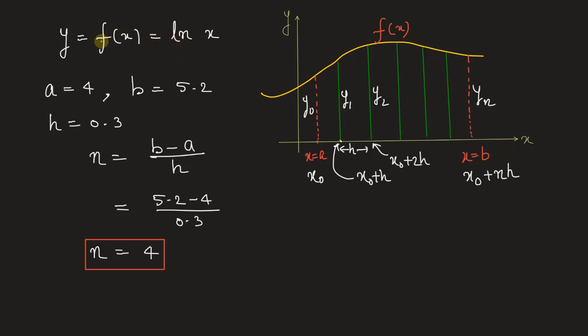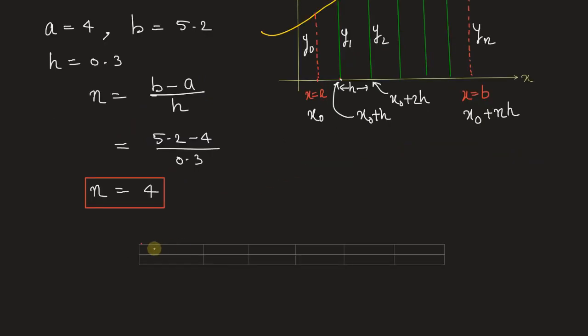Now let's make a table to calculate the value of function f(x) at the lower limit, the upper limit, and at each equal interval. In the first row we will write the value of x, and in the second row we will write the value of function y equals f(x).